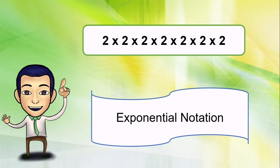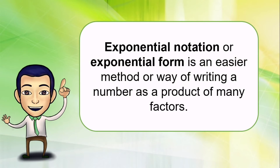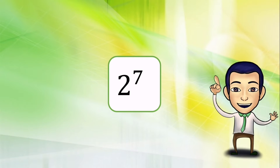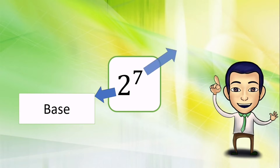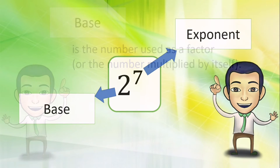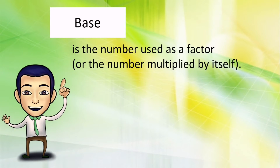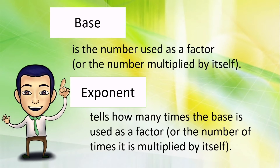Anyway, what is an exponential notation? Exponential notation or exponential form is an easier method or way of writing a number as a product of many factors. For example, this number here is an exponential notation — it's two raised to the seventh power. It has two parts: this number two is the base, and seven is the exponent. Base is the number used as a factor or the number multiplied by itself. Exponent tells us how many times the base is used as a factor or the number of times it is multiplied by itself.